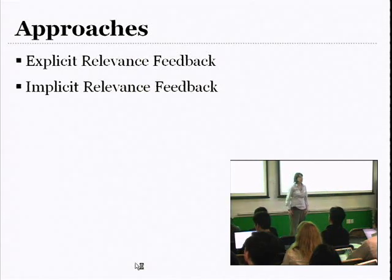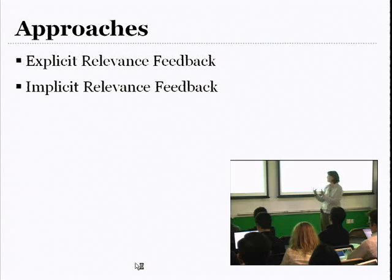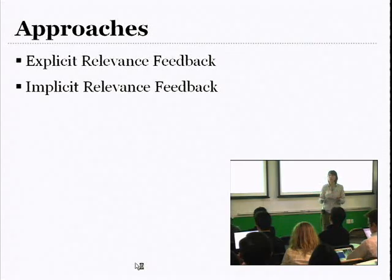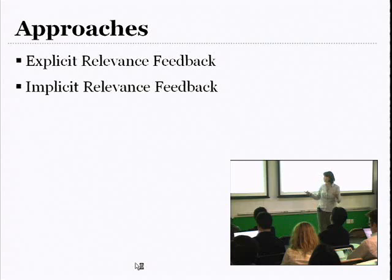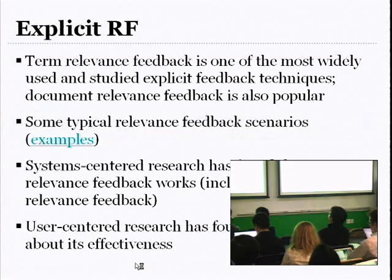Here are the two major types of relevance feedback. First, explicit feedback, which is something the user actively engages in — it's an activity in and of itself. The other kind is implicit feedback, which is more popular these days, where you're actually trying to mine signals from the person's natural interactions with the system. The user isn't doing anything extra; the user doesn't even know they're engaging in feedback.